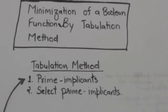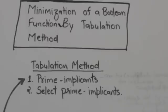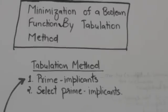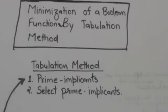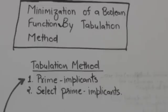Hello friends, welcome back. In this tutorial we will learn how we can minimize a boolean function by the tabulation method. To minimize a boolean function by the tabulation method, first we have to find the prime implicants, which are the candidate terms for inclusion in the simplified function.